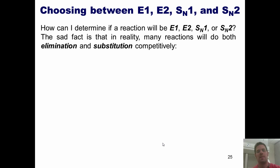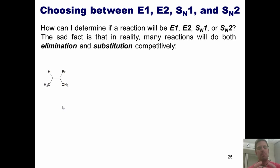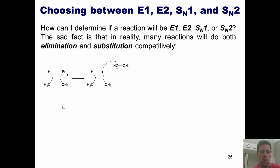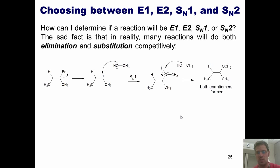Similar things can occur under SN1/E1 conditions. I can take this same molecule and stir it in the presence of a weak base like methanol, which has no negative charge on the oxygen — just lone pairs and a partial negative. As it stirs in solution, the bromine takes off, giving me a secondary carbocation. The methanol then comes into that hole, the oxygen forms a bond with the carbon — this is SN1 style. The oxygen brings along its hydrogen, temporarily becoming positively charged, until a second methanol molecule extracts it, giving the final product. This reaction gives both enantiomers rather than complete inversion of stereochemistry, as we would see in an SN2.